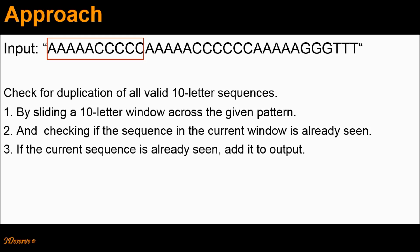So initially, we start with an empty seen set. We check if the current sequence — that is 5 A's followed by 5 C's — is already in the seen set. It is not. Therefore, we add this sequence to the seen set and advance the window by one character.